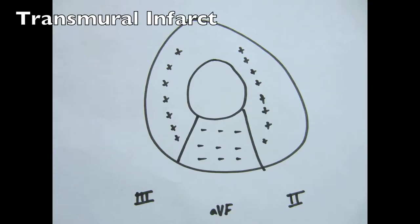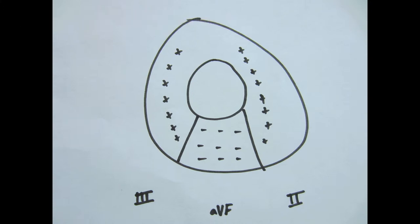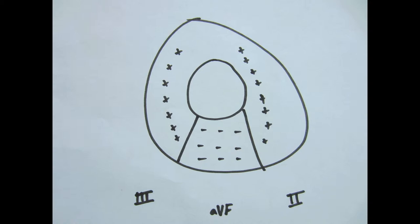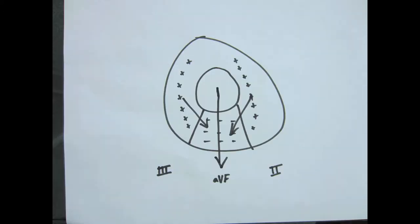ST elevation is caused by 100% total occlusion of the artery, which leaves the whole wall of the myocardium without blood. This is known as a transmural infarct. The vector points towards the ischemic tissue — here it points towards leads 2, 3, and AVF — which gives us the appearance of ST elevations on EKG.